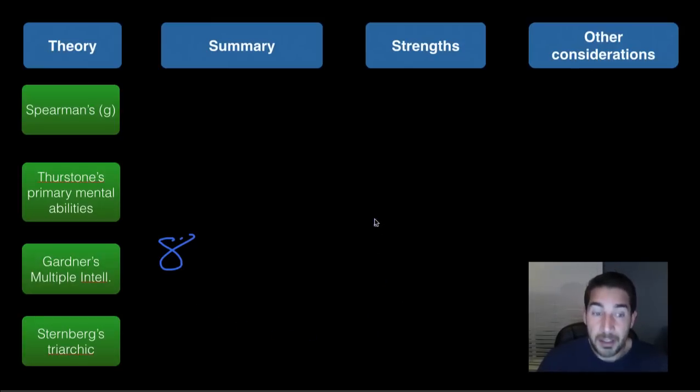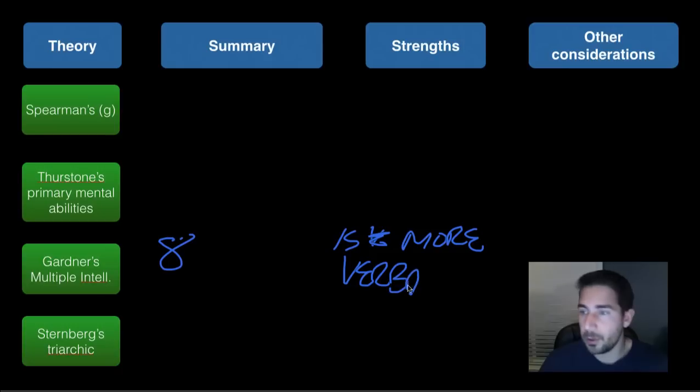And so strength is that intelligence is more than verbal and nonverbal and mathematical, is more than that. And then other abilities are important. Other abilities are important.